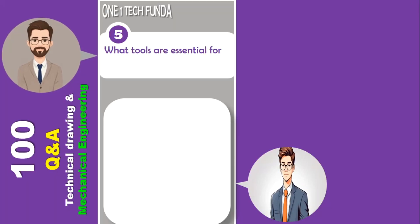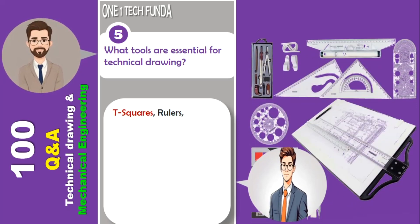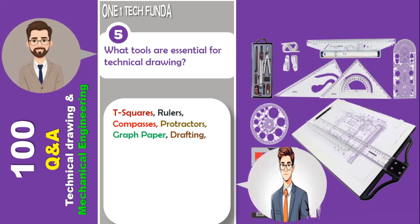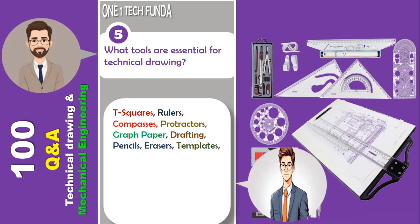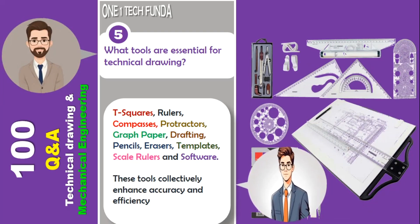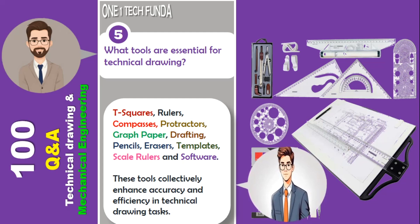What tools are essential for technical drawing? T-squares, rulers, compasses, protractors, graph paper, drafting pencils, erasers, templates, scale rulers, and software. These tools collectively enhance accuracy and efficiency in technical drawing tasks.